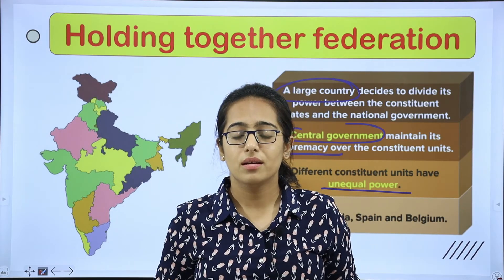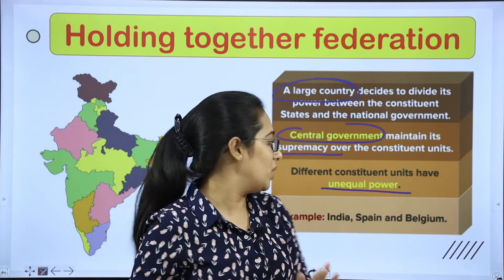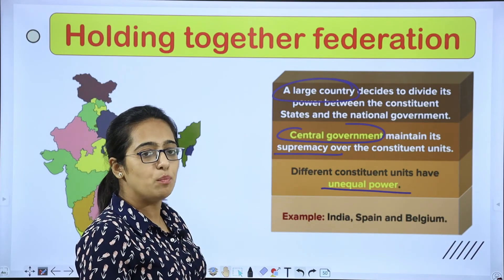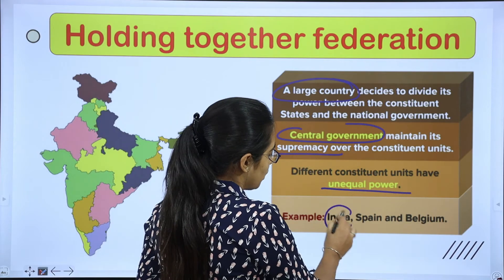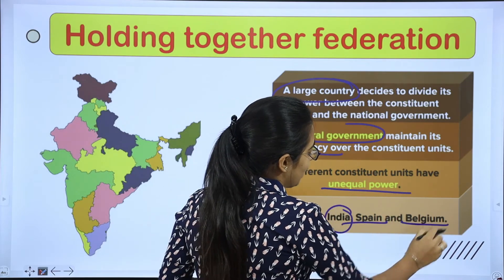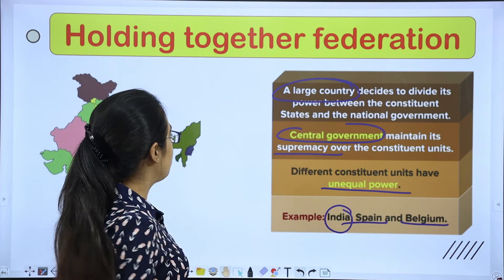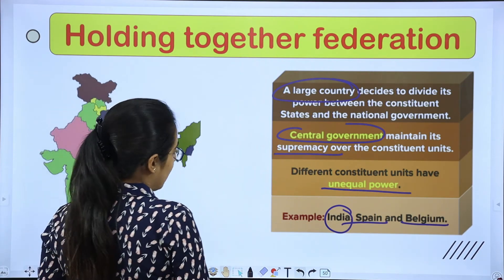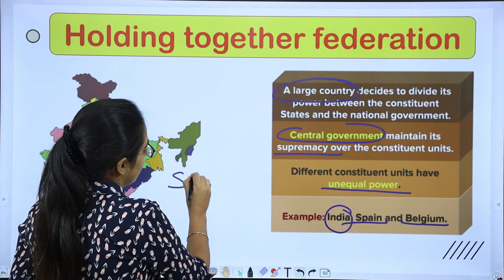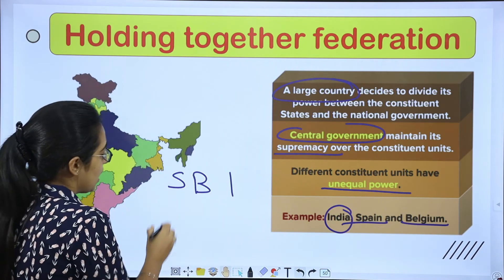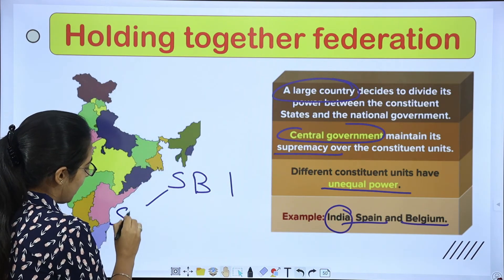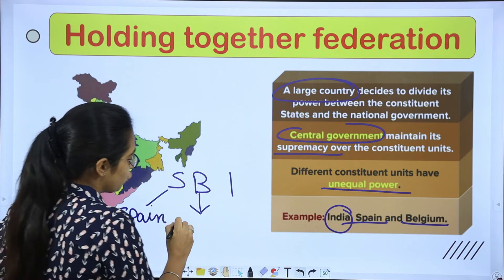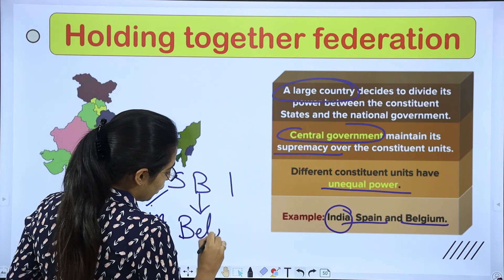In Holding Together Federation, unequal powers are there. Examples: India, Spain, and Belgium. The trick to remember is SBI — S means Spain, B means Belgium, I means India.